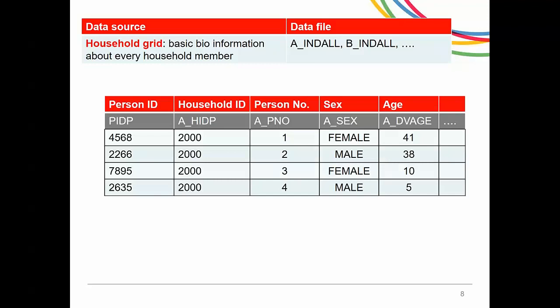Here is an example of the type of data stored in this file. This is information about a four-person household where each person is uniquely identified by a variable called PIDP, and the household is uniquely identified by a variable called A underscore HIDP. Each person in the household is assigned a person number called A underscore PNO. The variable A underscore sex represents the biological sex of the person, and A underscore DVH represents their age at the time of the interview.